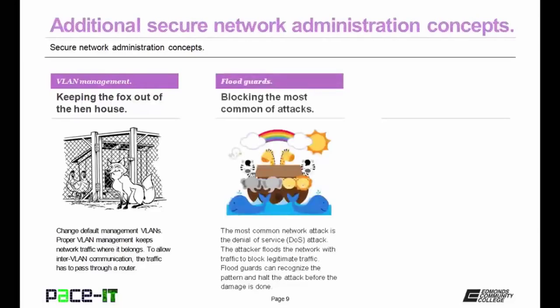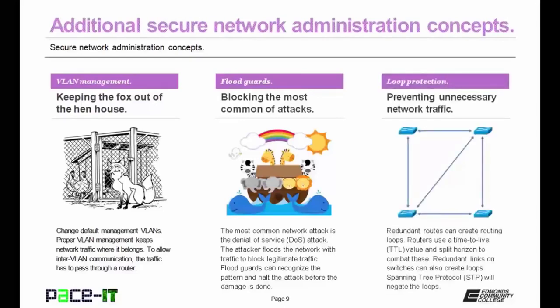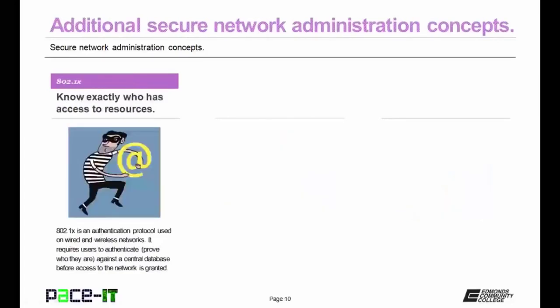Then there are flood guards, which block the most common of attacks. The most common network attack is still the denial of service, or DoS, attack—the attacker tries to flood the network with traffic to block legitimate traffic, but flood guards can recognize the pattern and halt the attack. Then there's loop protection: redundant routes can create routing loops, and routers use a time-to-live value and split horizon to combat them. Redundant links on switches can also create loops, and spanning tree protocol, or STP, will negate these loops. If possible, you should implement 802.1x, an authentication protocol used on wired and wireless networks that requires users to authenticate against a central database before access is granted.